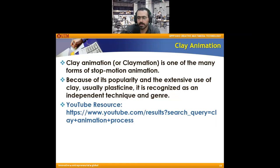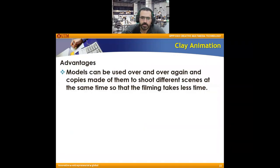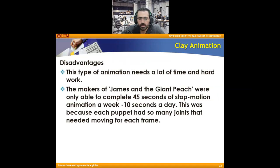Clay animation is one of the many forms of stop motion animation because it's very popular — same concept as stop motion but using clay. An example is Chicken Run. The advantage is it can be used over and over again with the same movement and key frames. The disadvantage is it needs a lot of time and hard work — same as stop motion, roughly 10 seconds a day, about a week for 45 seconds — with a team usually of more than 20 or 30 people.